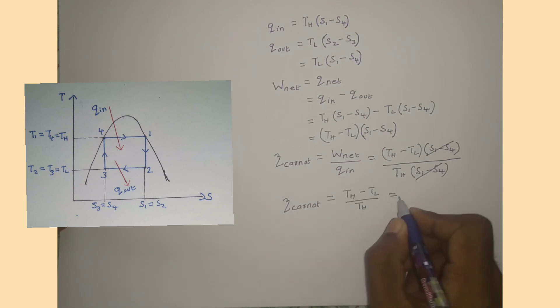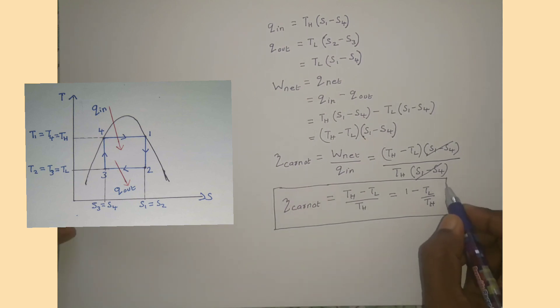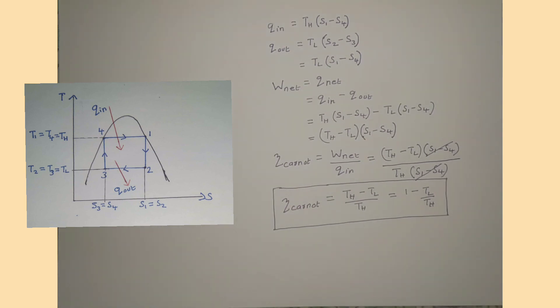That is 1 minus TL divided by TH. This is the expression for Carnot efficiency or thermal efficiency of a Carnot vapor power cycle.